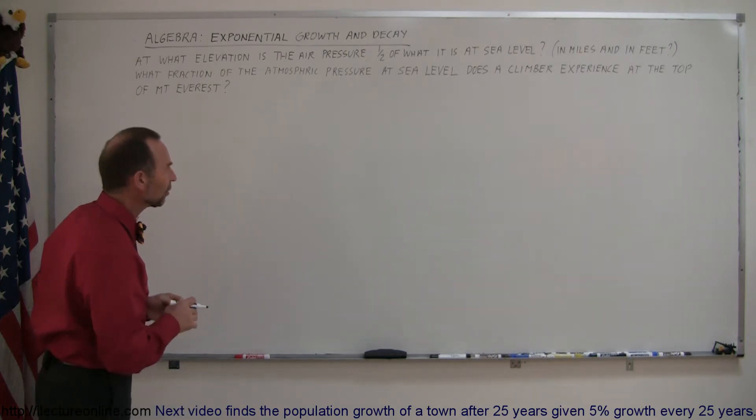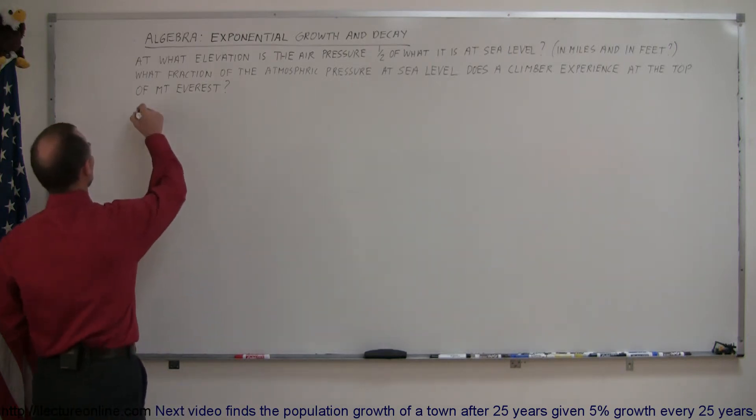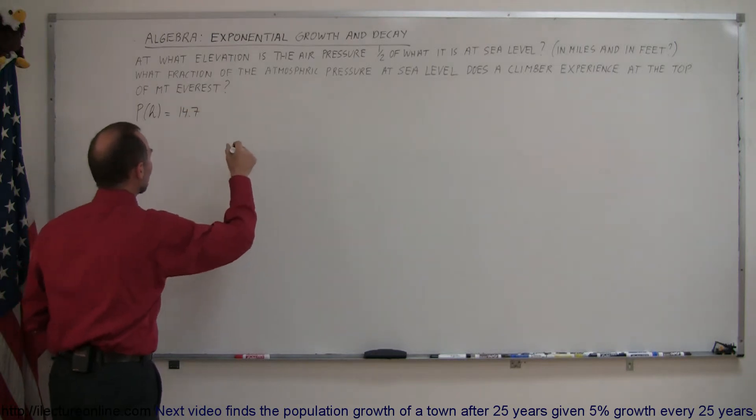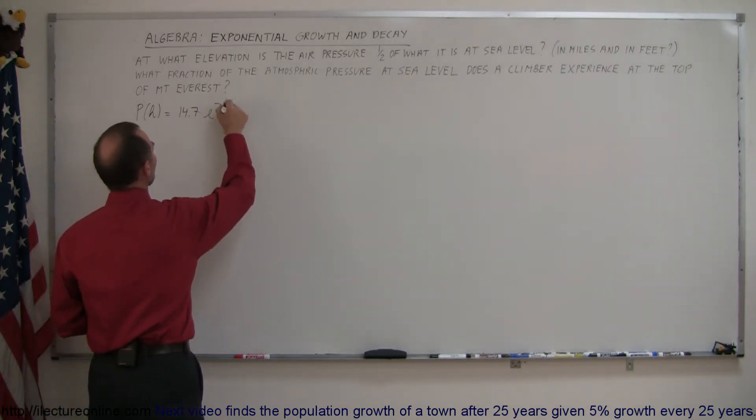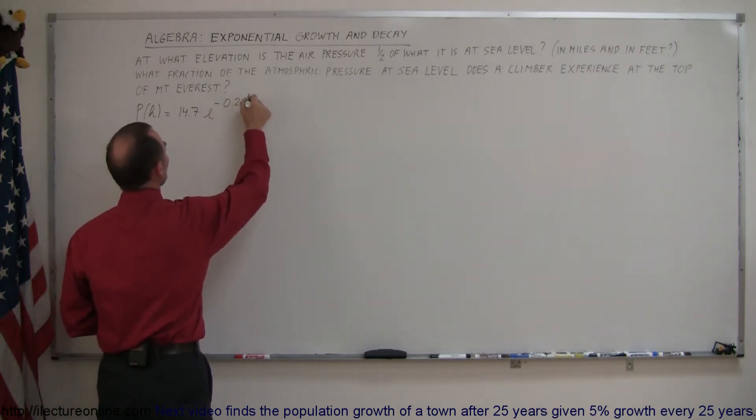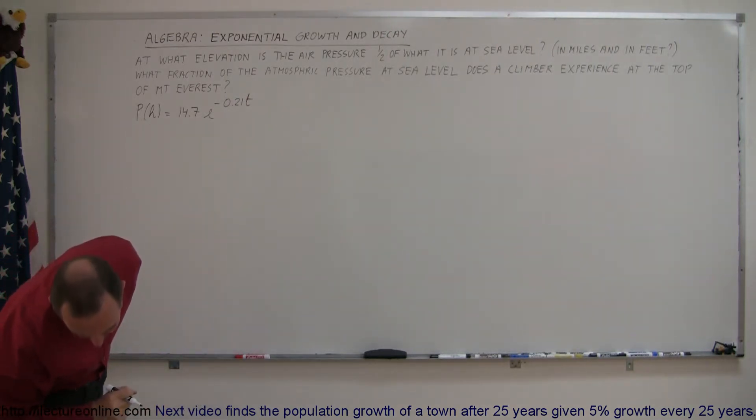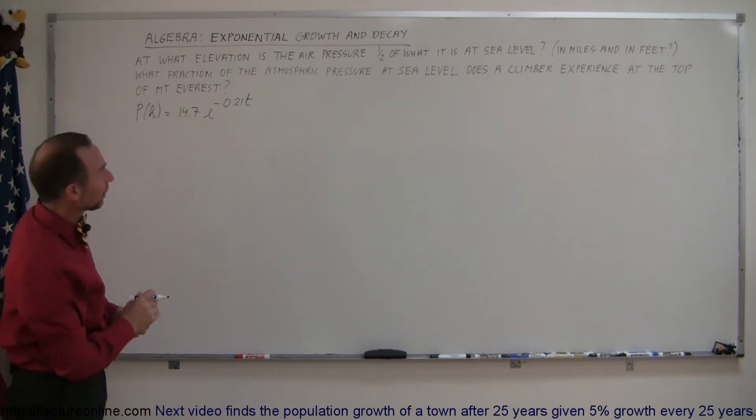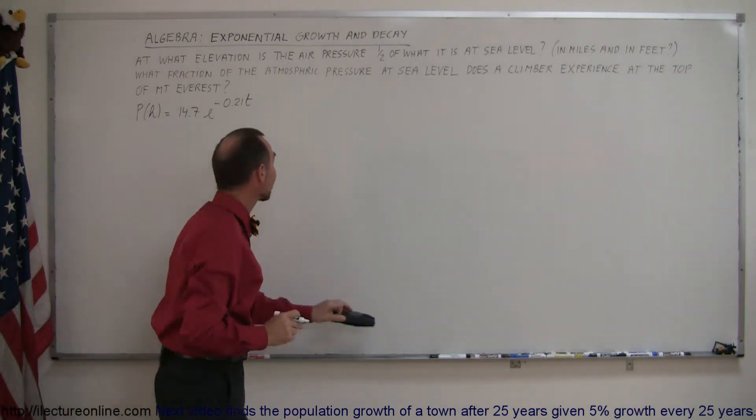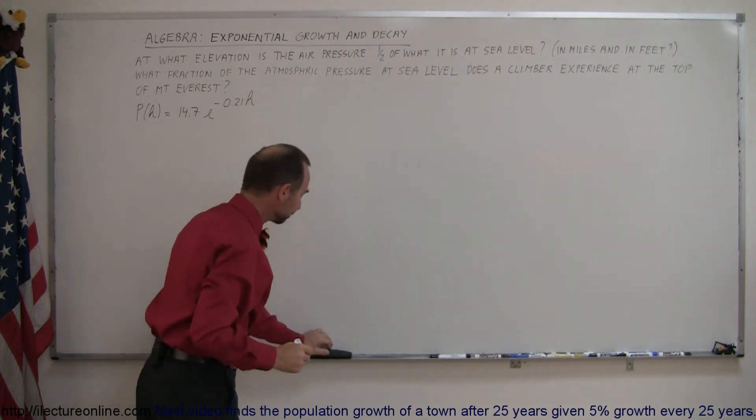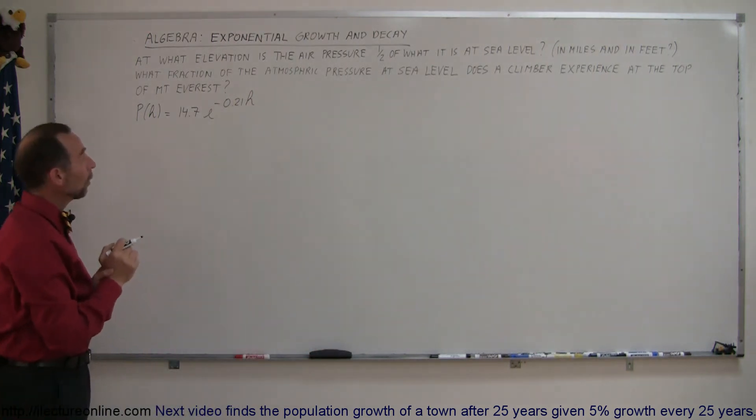Our next example asks: at what elevation is the air pressure one-half of what it is at sea level, in miles and in feet? Then, what fraction of the atmospheric pressure at sea level does a climber experience at the top of Mount Everest? Remember the equation from the previous example: the pressure as a function of height is P(h) = 14.7 pounds per square inch times e^(-0.21h). Let's use H for height instead of T.